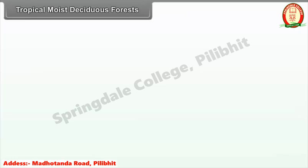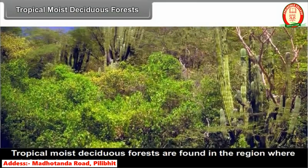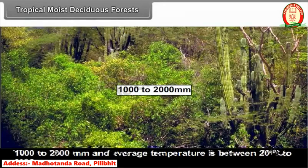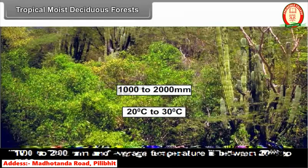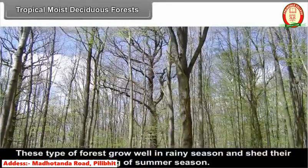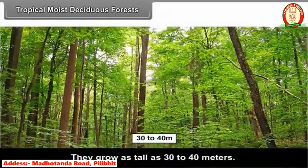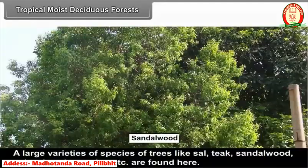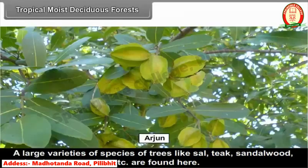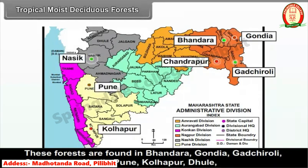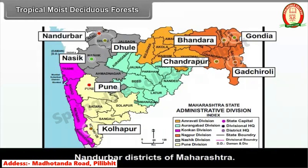Tropical moist deciduous forests are found where rainfall is between 1000 and 2000 mm and average temperature is between 20°C and 30°C. These forests grow well in the rainy season and shed their leaves at the beginning of summer. They grow as tall as 30 to 40 meters. A large variety of species like Sal, Teak, Sandalwood, Paras, Kanchan, and Arjun are found here. These forests are found in Bhandara, Gondiya, Gadchiroli, Chandrapur, Nashik, Pune, Kolhapur, Dhule, and Nandurbar districts of Maharashtra.